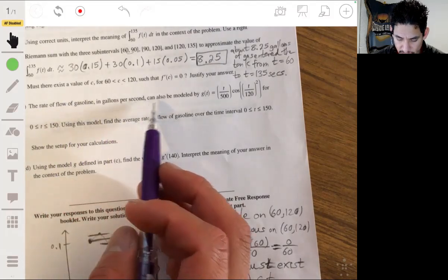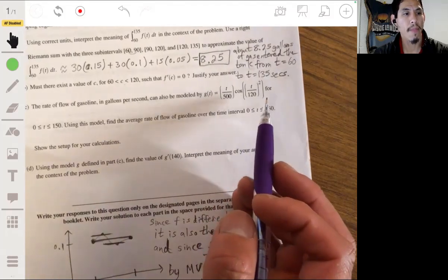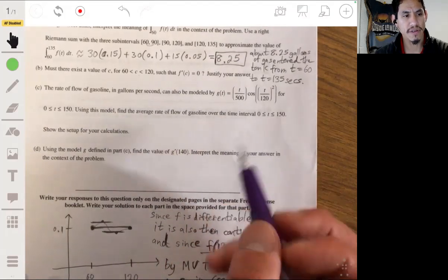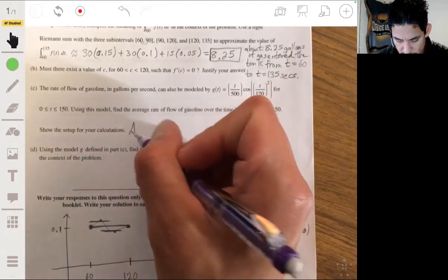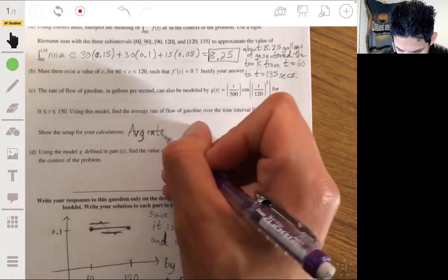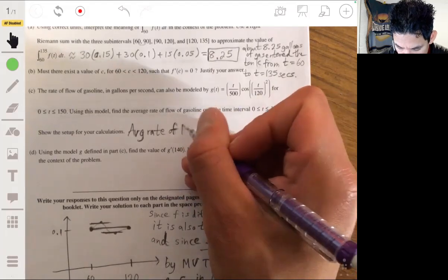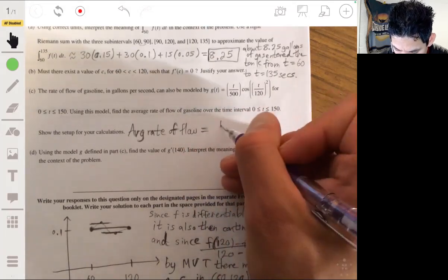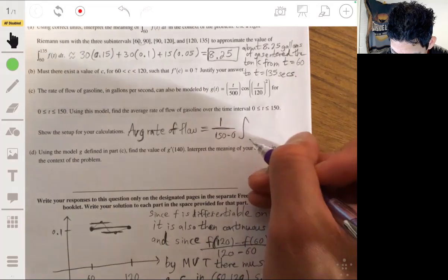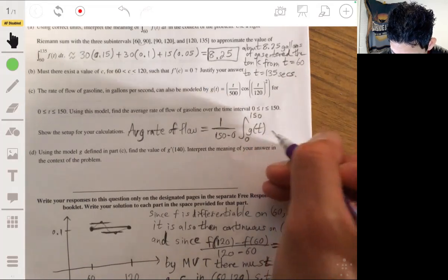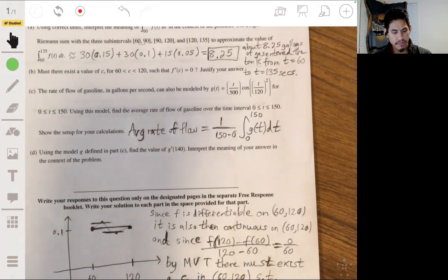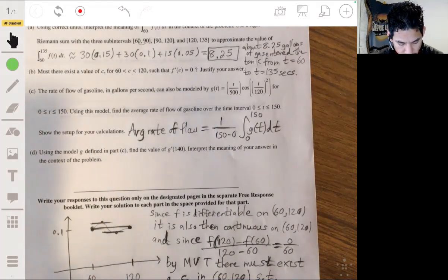Now for part C, the rate of flow of gasoline in gallons per second can be modeled by this function for t between zero and 150. Using this model, find the average rate of flow of gasoline over the time interval from zero to 150. Show a setup for your calculations. So the average rate of flow, this is basically like finding the average value using the average value theorem. So it would be one over 150 minus zero, or one over 150 times the integral from zero to 150 of G(t)dt. And you can just use your calculator for that.